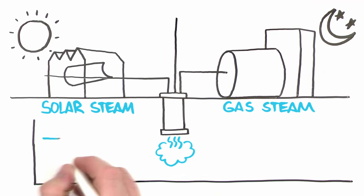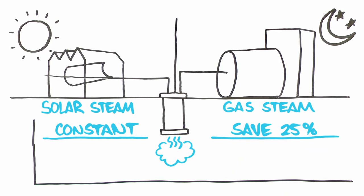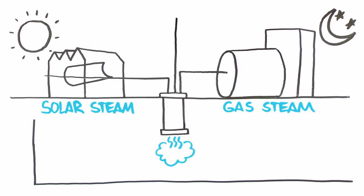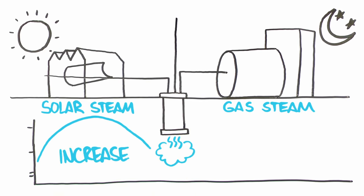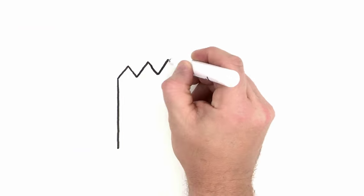If the rate of steam injection is held constant, gas consumption is reduced by up to 25%. By injecting more steam during the day and less at night, gas consumption can be reduced up to 80% without the need for costly thermal storage.